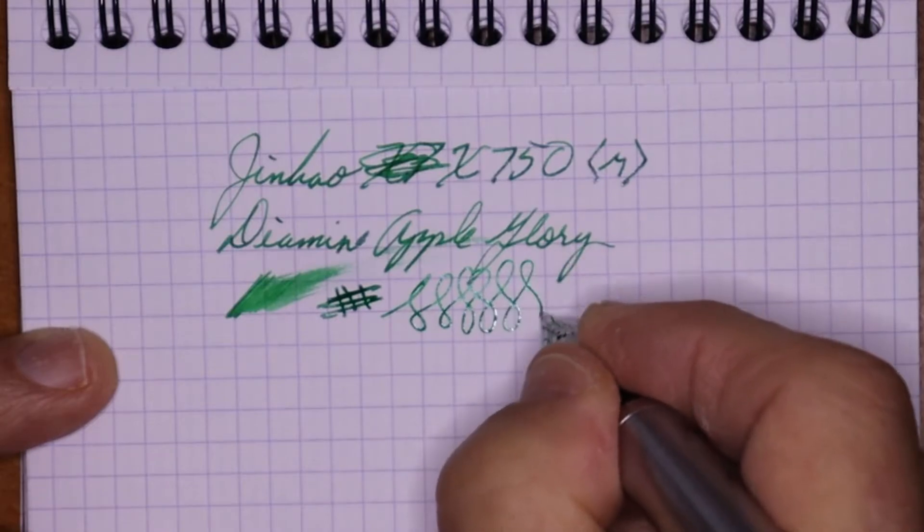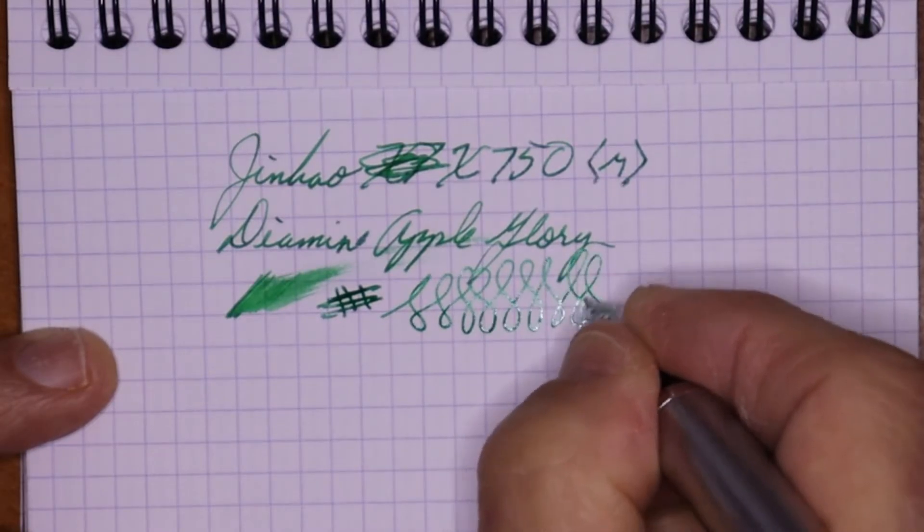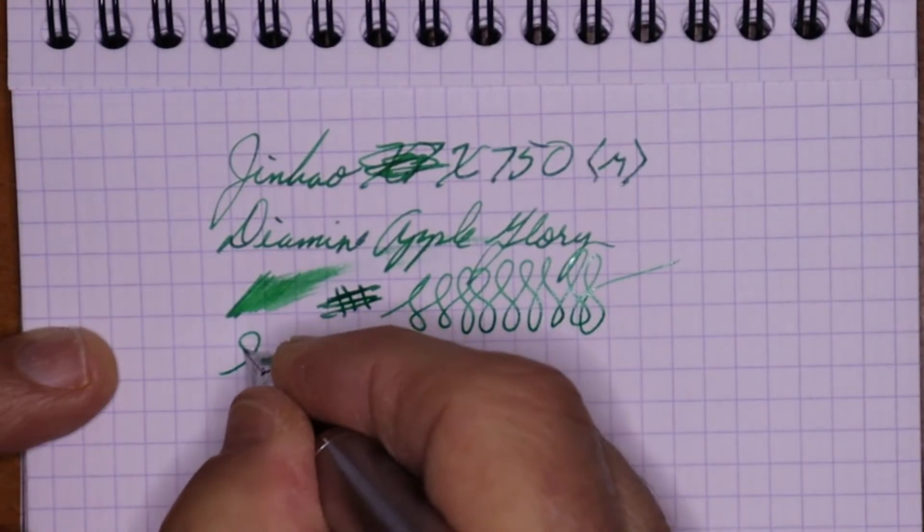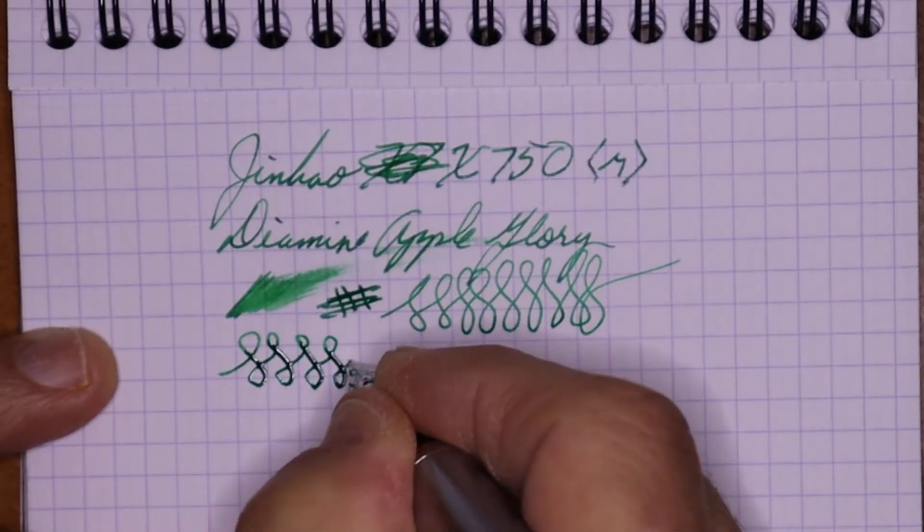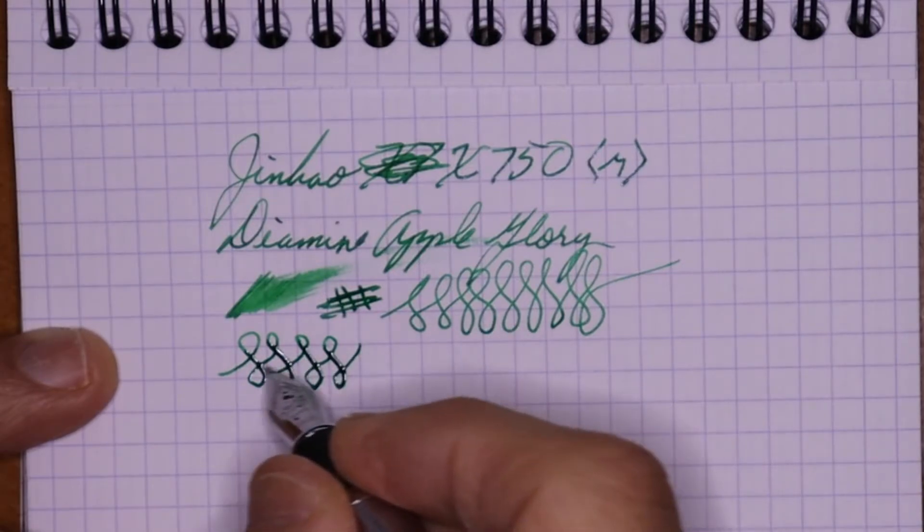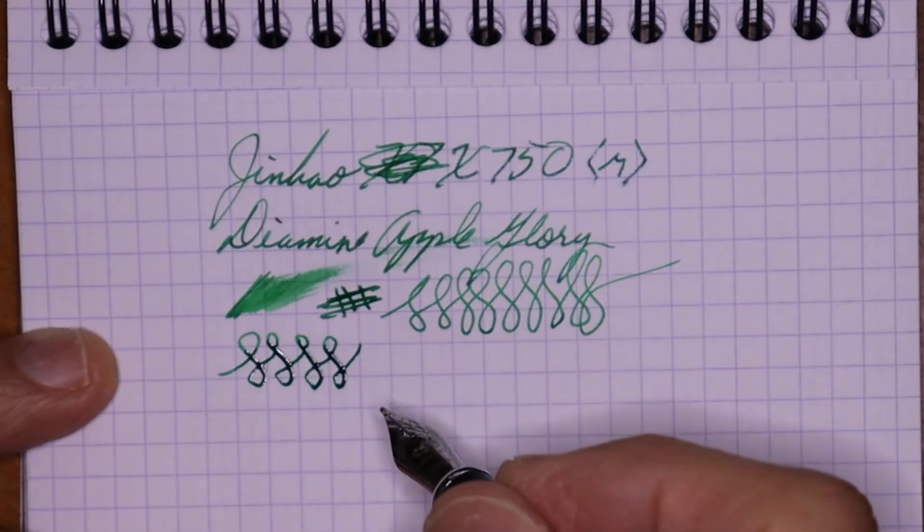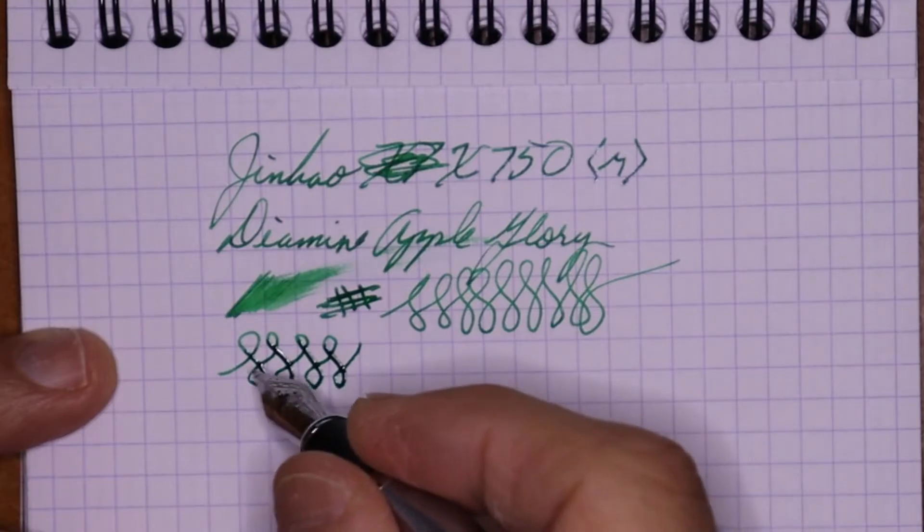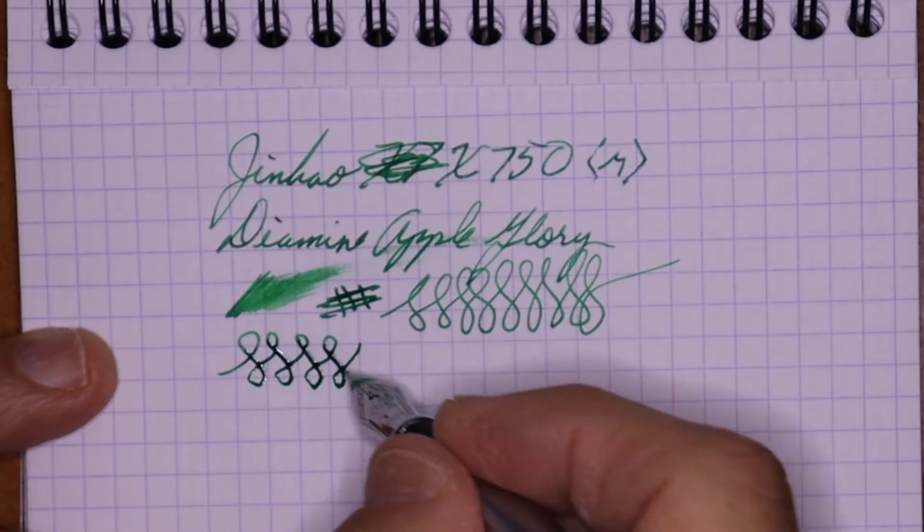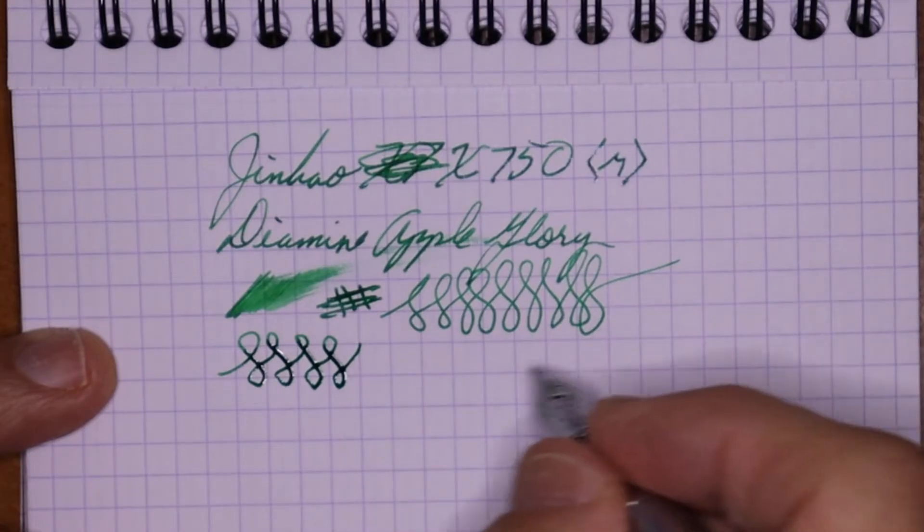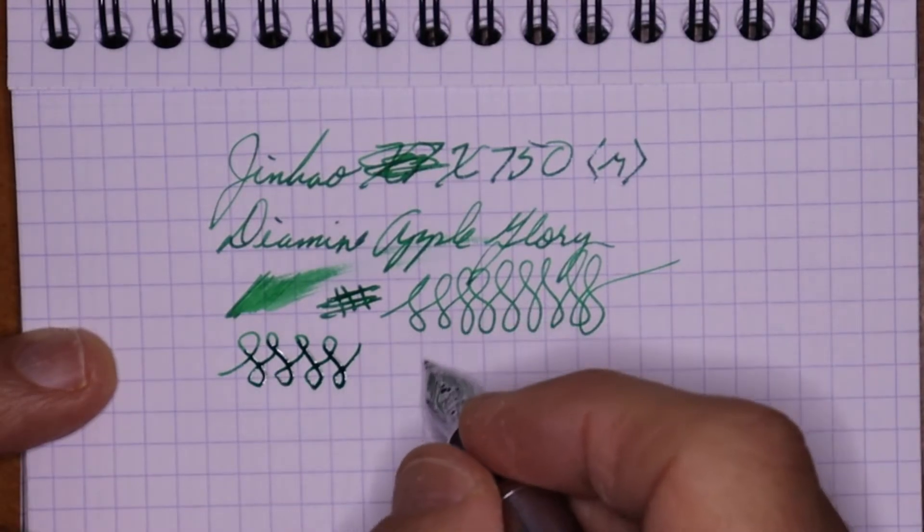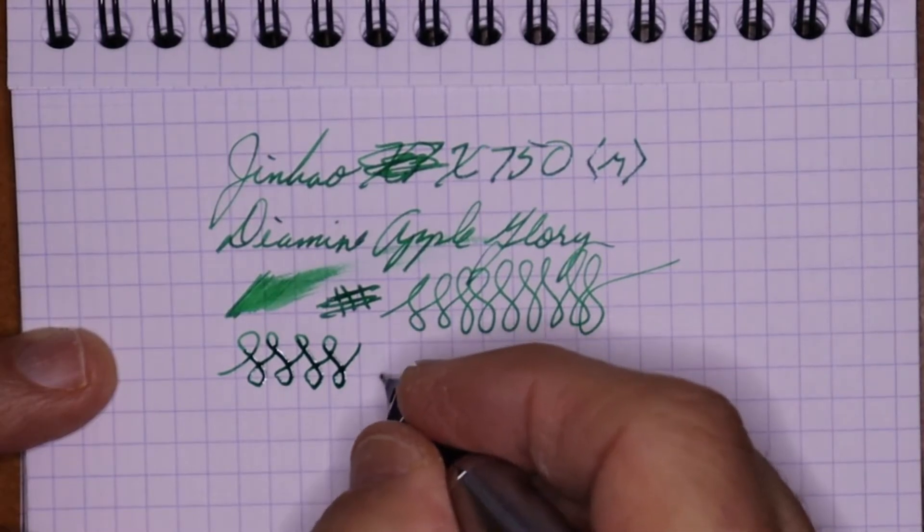Flow again is real good, no hard starts or skips. Line variation not really, but it will put out some juice so you'll get a little more ink there, so it'll be a little more saturated on those where you press down, which I think is really cool. I don't know if you could see it shining but I like it. Reverse writing.